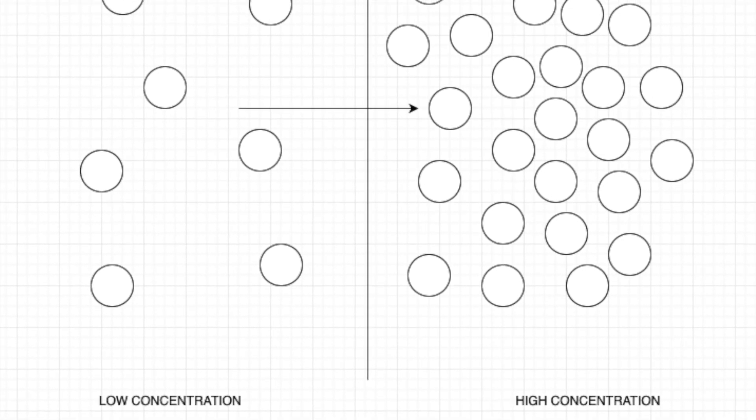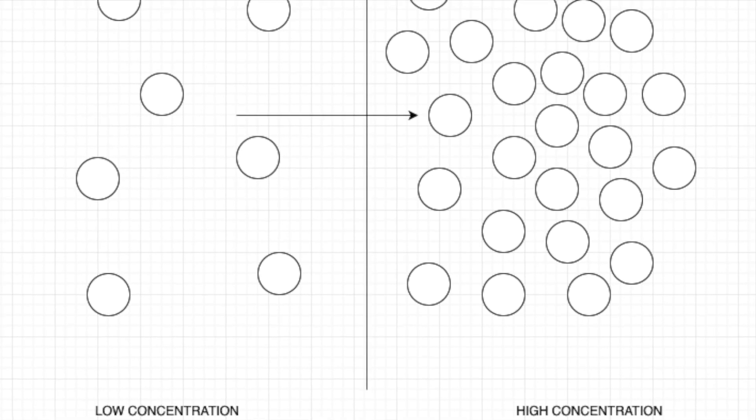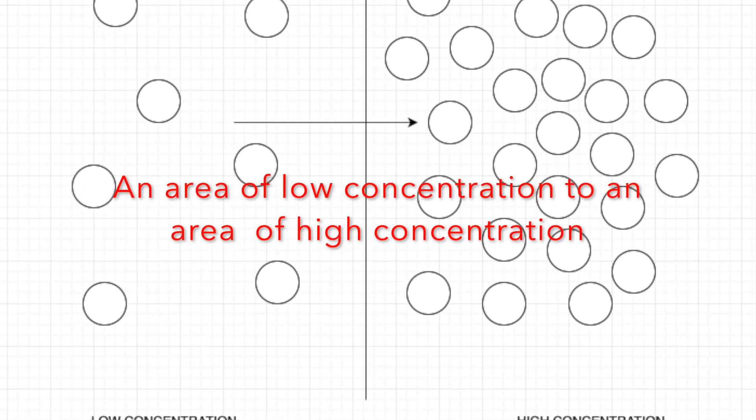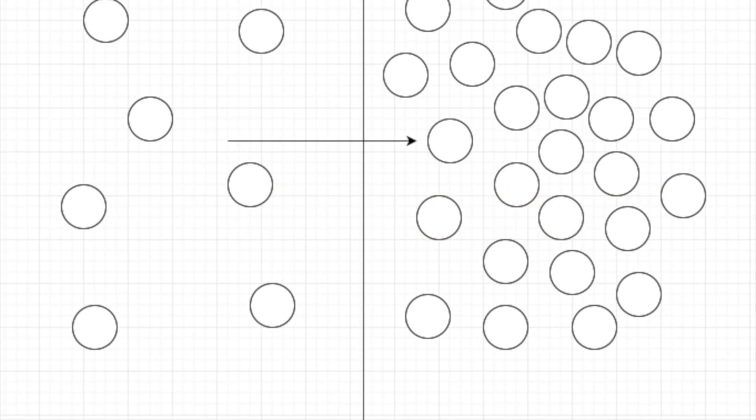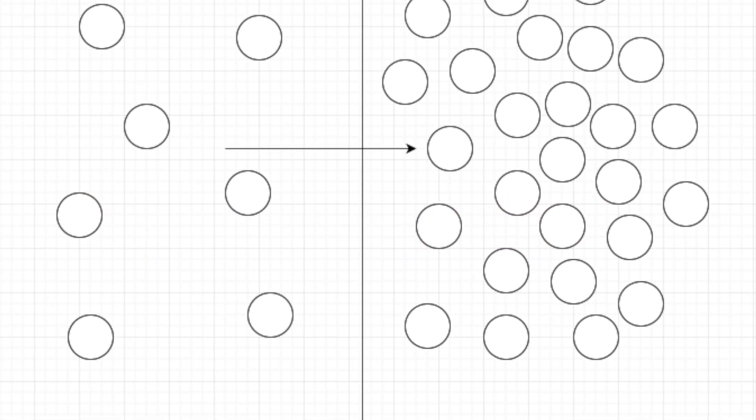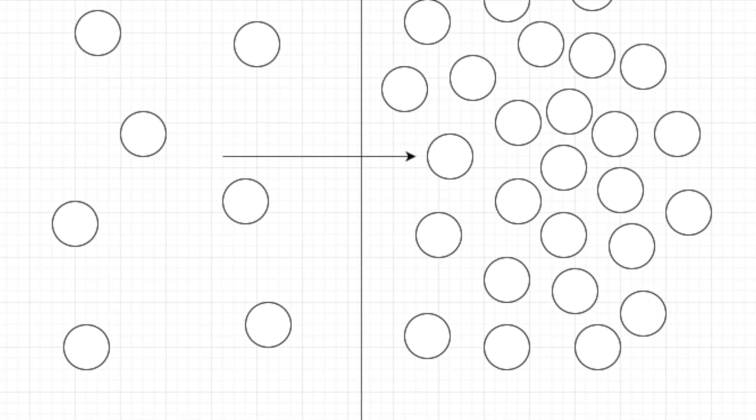Active transport allows substances to be moved from an area of low concentration to an area of high concentration. This is against the concentration gradient, unlike diffusion or osmosis that we've looked at in previous videos.